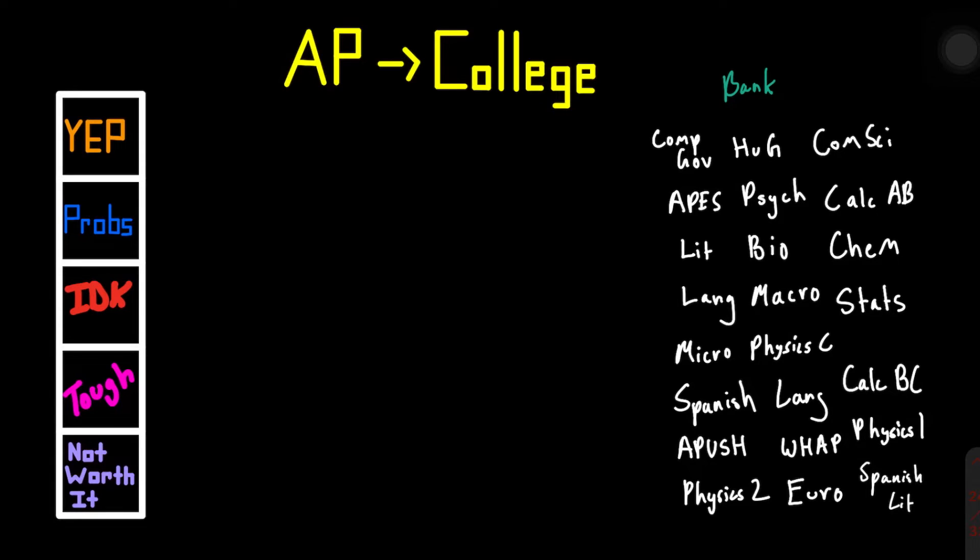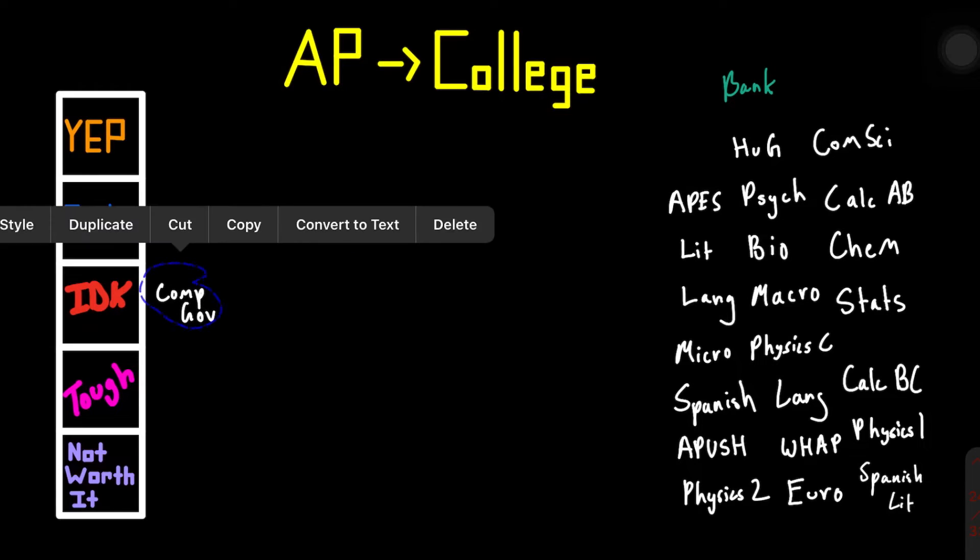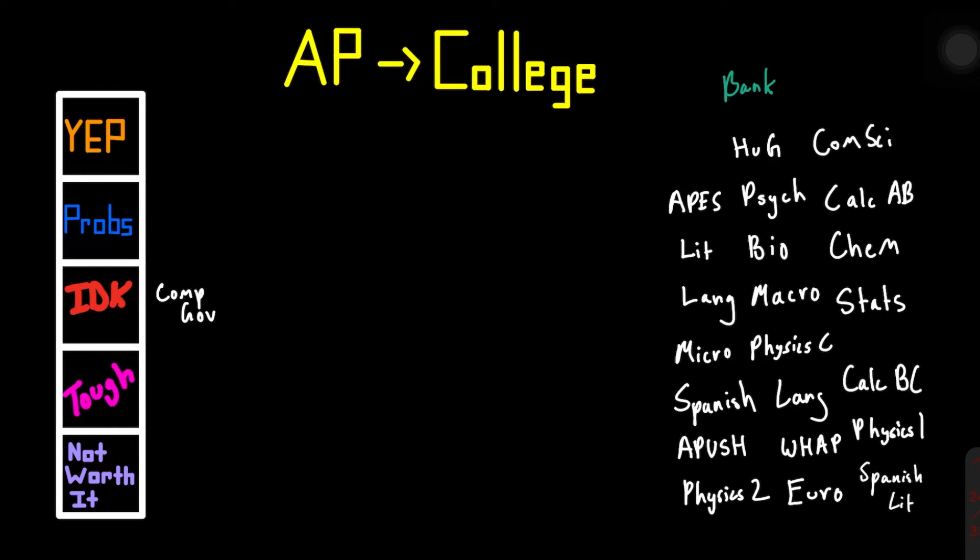I'll just go ahead and disclaimer. I go to UT Austin and this is all relevant with my experience there. So let's get right into this. The first class is going to be comparative government. And we're going to say that is an I don't know. I'll explain why. Comparative government is about other countries and especially in a public university, they don't care too much unless you're a government major or something like that. That's why it really depends. Put it in the I don't know category.